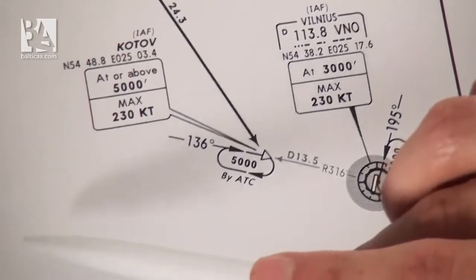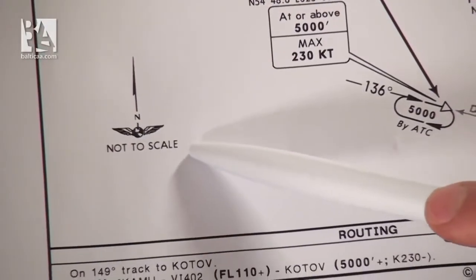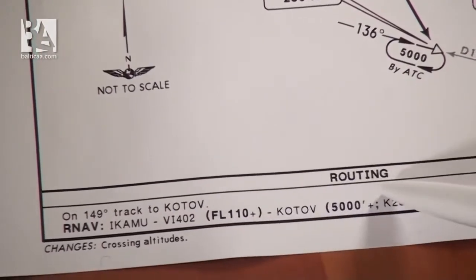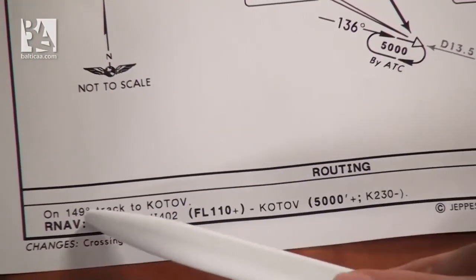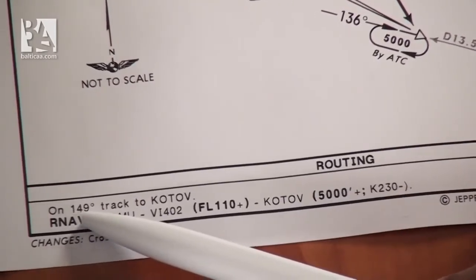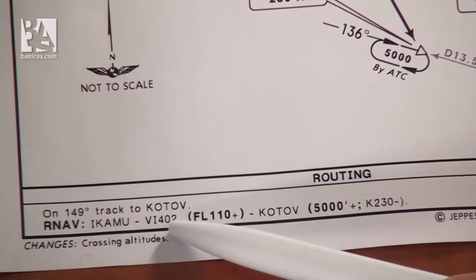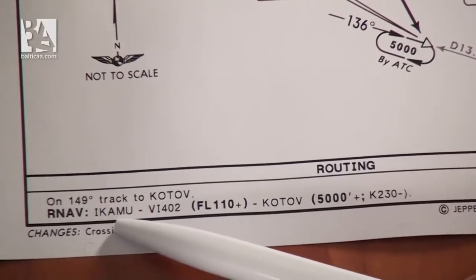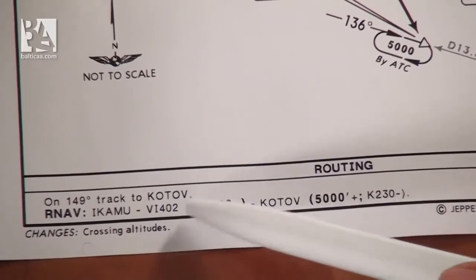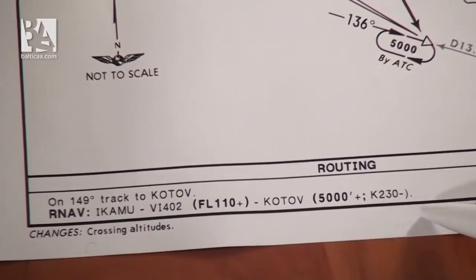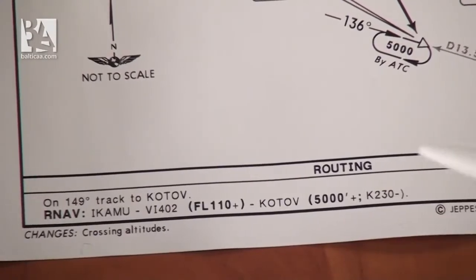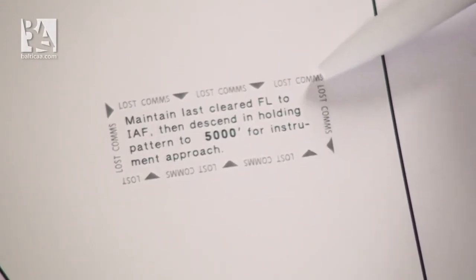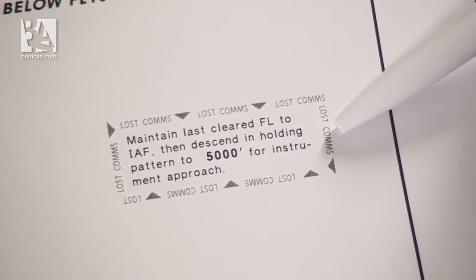To the left we have some indication that this is not to scale. Below we have the routing, which basically shows a 149-degree track to CUTOFF — this is general routing. For RNAV we have waypoints ICAMU, Victor India 402, and then CUTOFF with the altitude restrictions noted. The last thing on this chart is the lost communications procedure: maintain last cleared flight level to the initial approach fix, then descend in the holding pattern to 5,000 feet for the instrument approach.